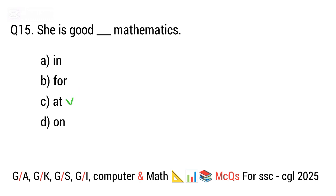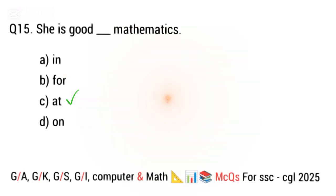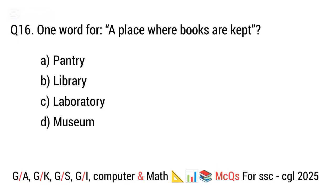Question 16. One word for a place with books. The right answer is option B. Library.